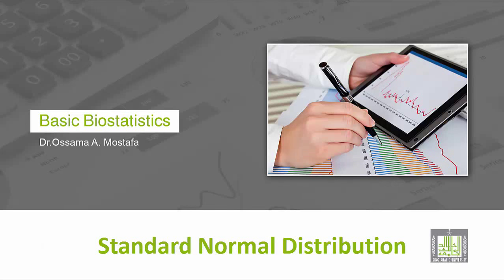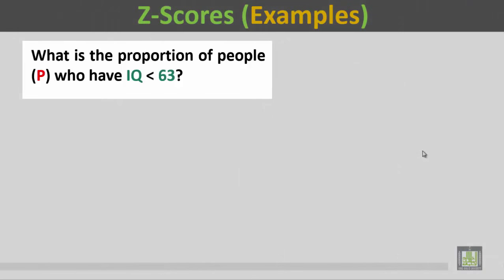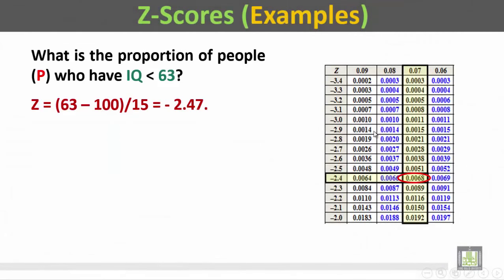What is the proportion of people who have IQ less than 63? Let's calculate the z-score. Z equals 63 (that's the x value) minus the mean 100, divided by the standard deviation 15. So Z equals minus 2.47. Now this is the z-scores table.